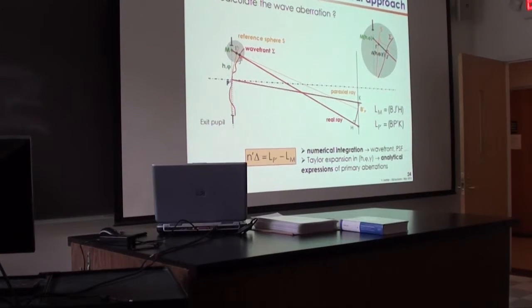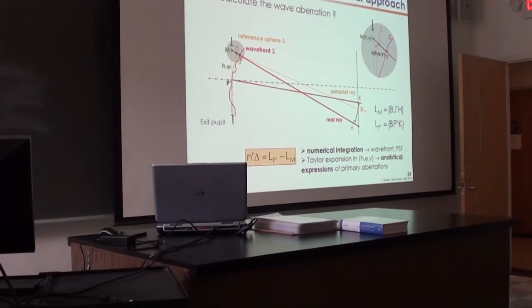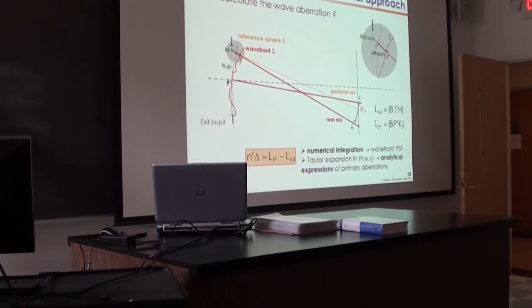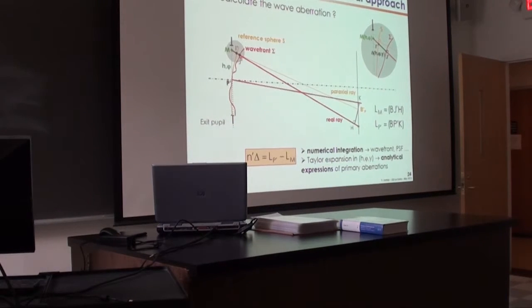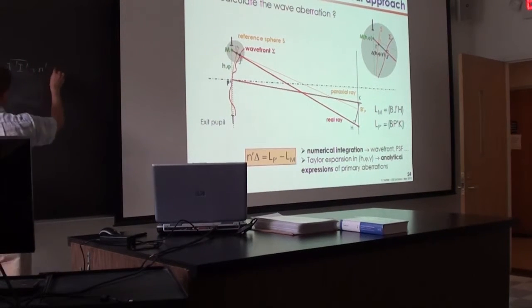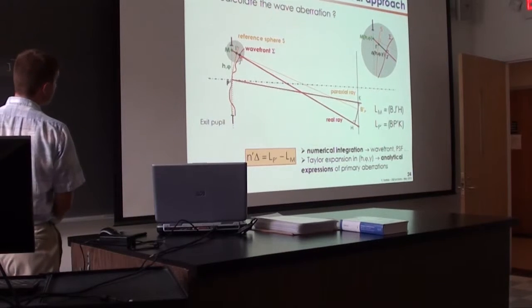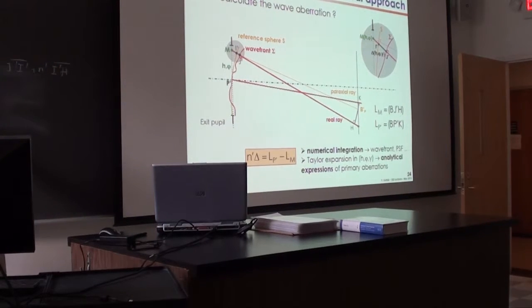And this is B, G prime — B, G prime, plus N prime, P prime, K. So this is DG prime, plus N prime — J prime H is J prime I prime, plus I prime H. That's basically this.